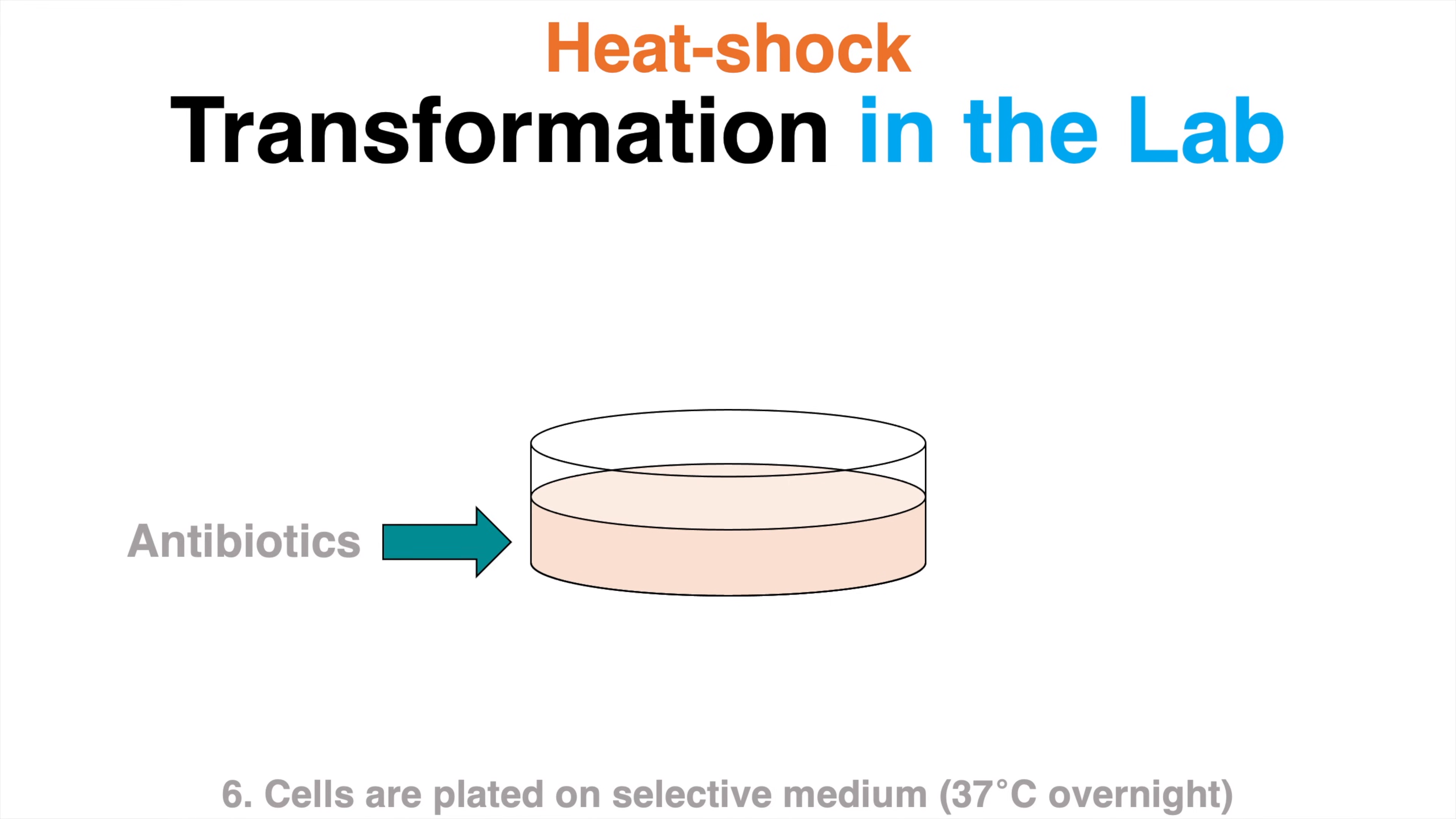That means the medium contains antibiotics preventing growth of bacteria which are not resistant. The plasmid used for transformation does not only contain our gene of interest but also a sequence coding for antibiotic resistance.